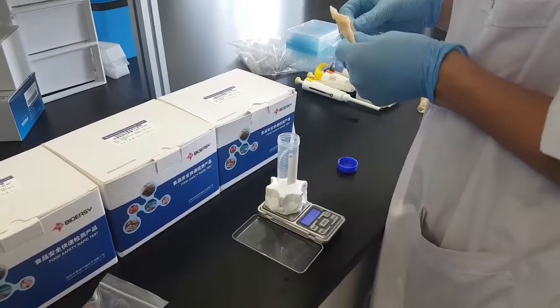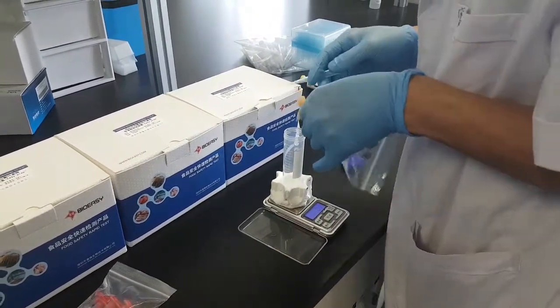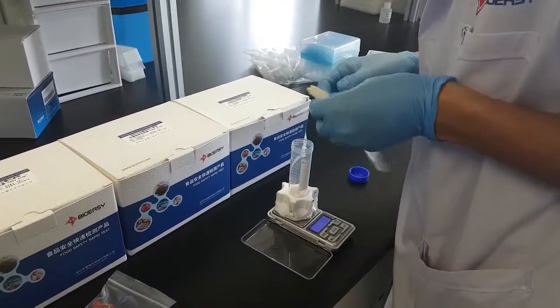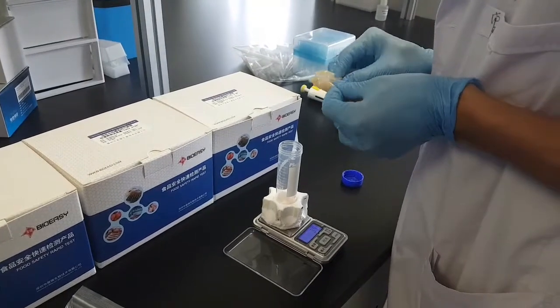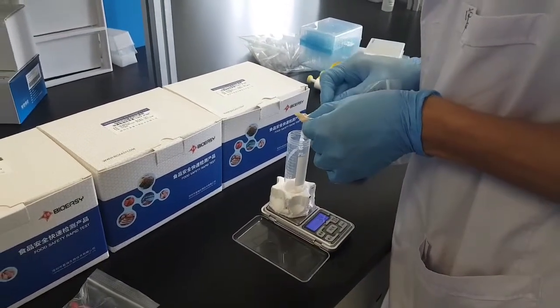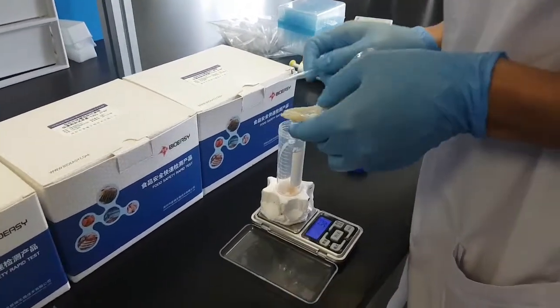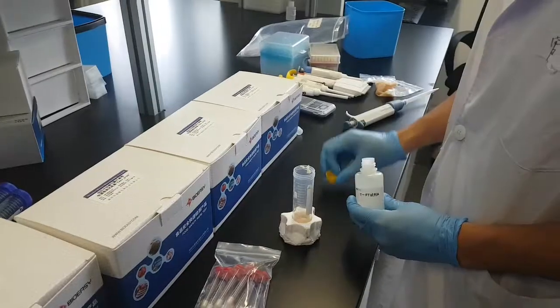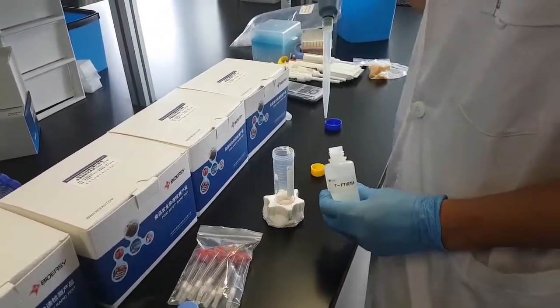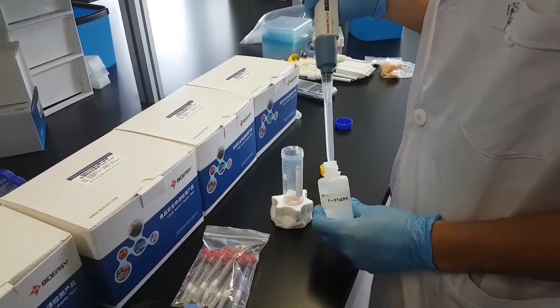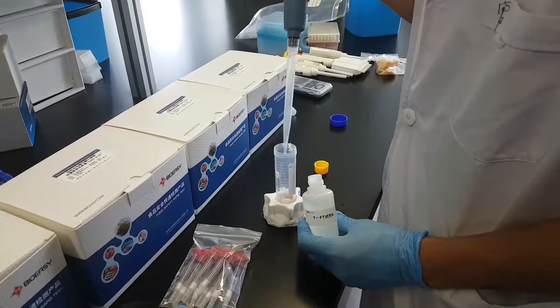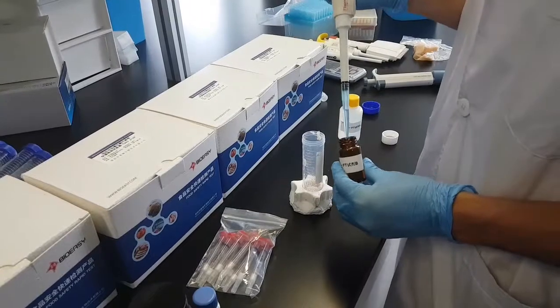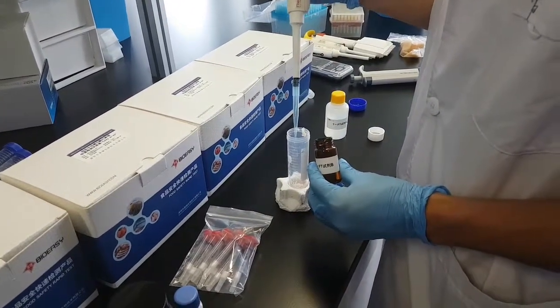First step would be sample preparation. We'll weigh six grams of homogeneous tissue sample and put it into a 50 milliliter centrifuge tube. Our sample here is chicken. After weighing our sample, we'll put five milliliters of reagent A to the centrifuge tube, 800 microliters of reagent B as well.